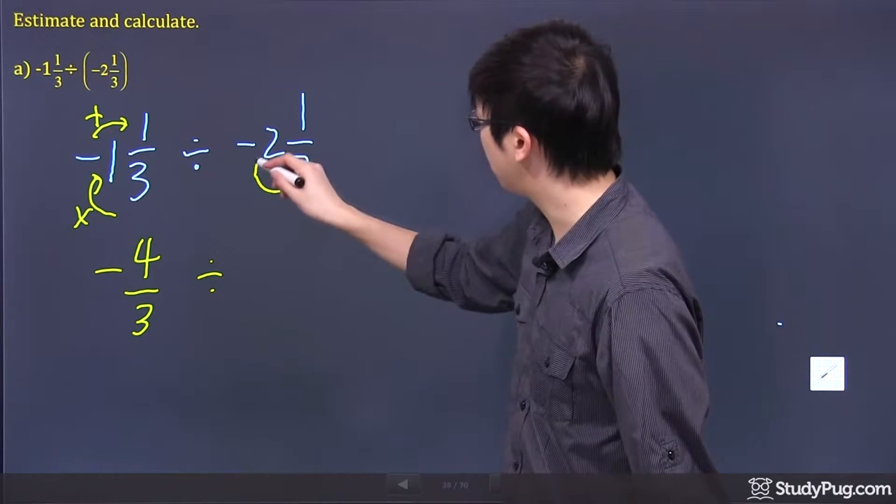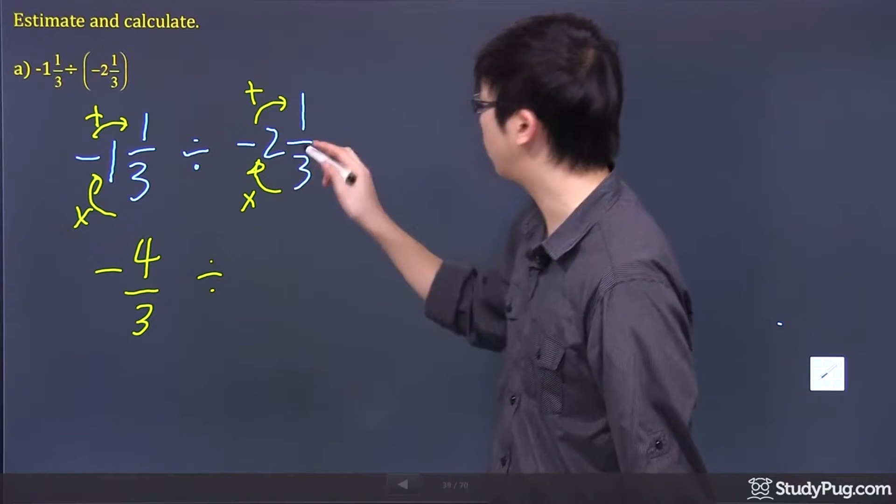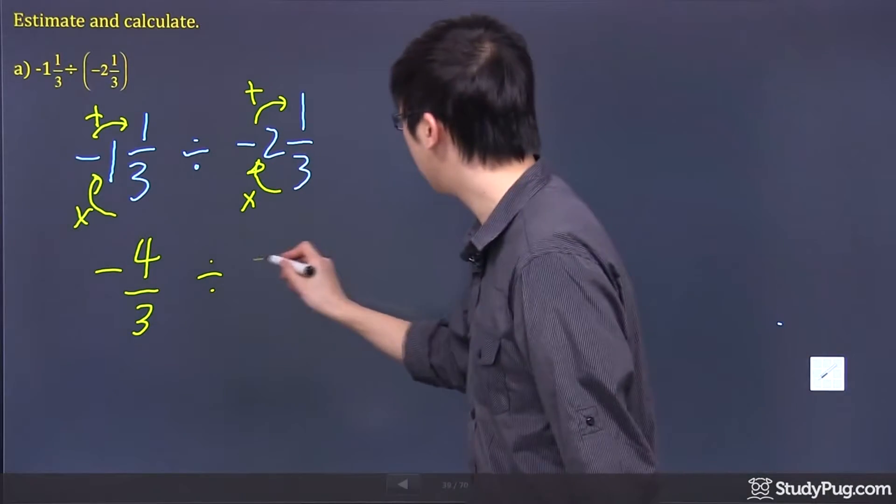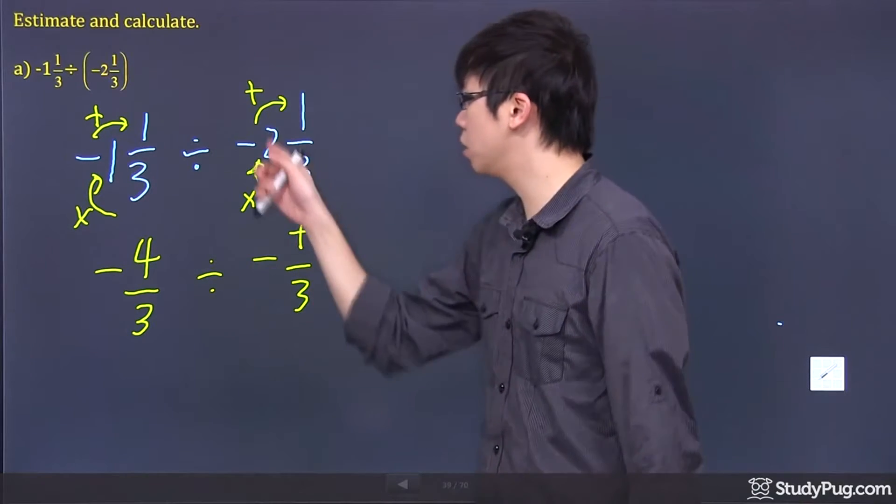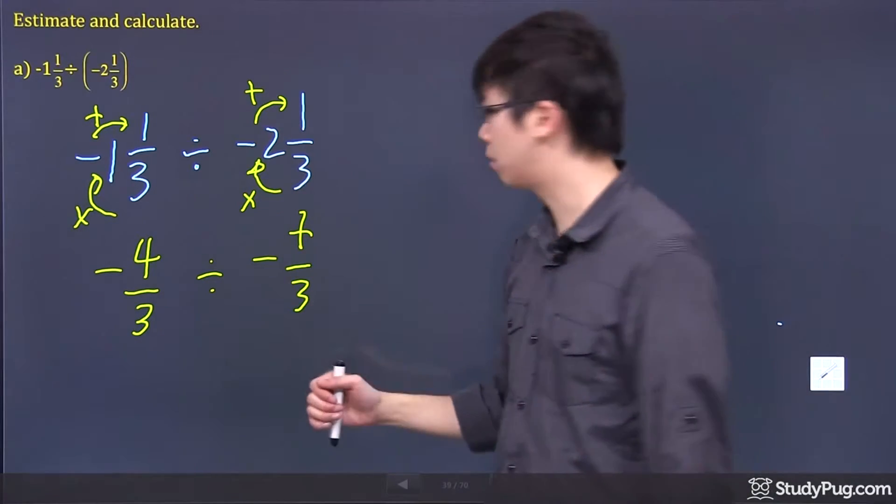Divided by, same thing right here. So, 3 times 2, and you add 1 to that. So 3 times 2 is 6, plus 1 is 7. Negative 7 over 3. When you're doing the multiplying and adding this part right here, don't worry about the negative sign. Just bring it down.